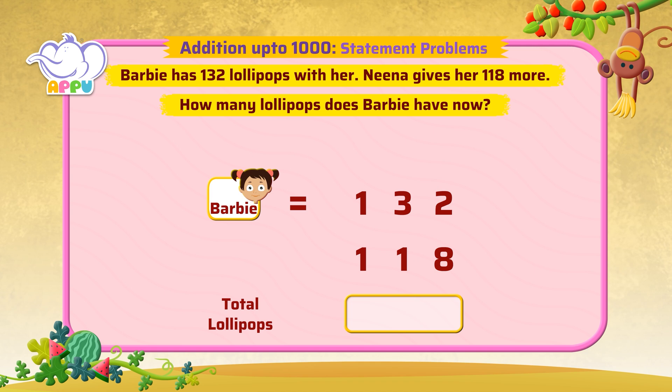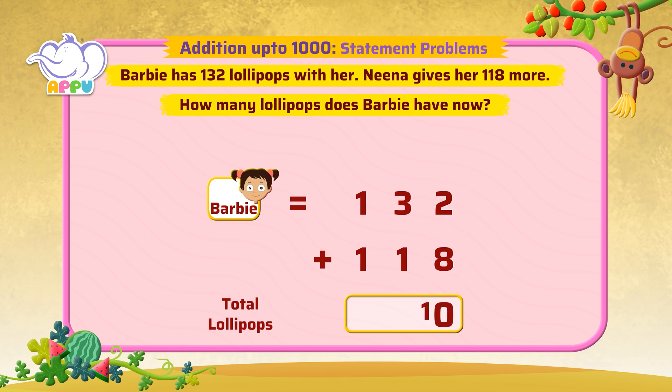Define the total number of lollipops. We add 132 and 118. We add the 1's first. 2 plus 8 is equal to 10. We write 0 in the 1's place and carry 1 to the left.